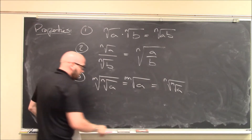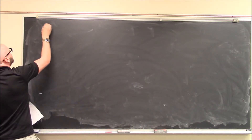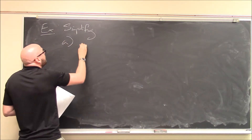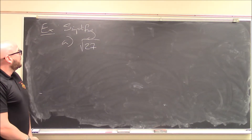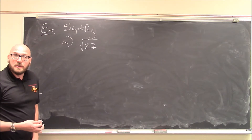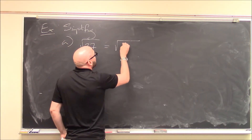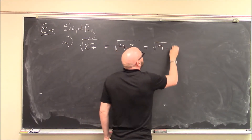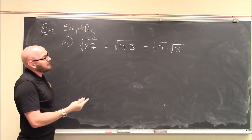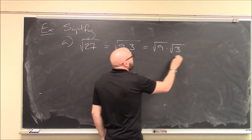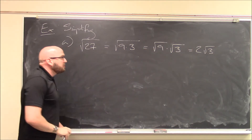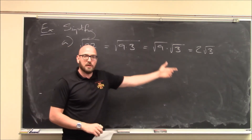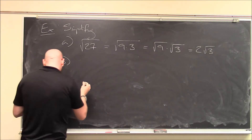Using these properties, we'll simplify a few expressions. Simplify: the square root of 27. There's no whole number that when multiplied by itself gives 27. But I can think of this as the square root of 9 times 3 — because 9 times 3 is 27. I can write this as the square root of 9 times the square root of 3. The square root of 9 is 3, so this is 3 root 3. Most people would agree that's simplified — it looks prettier than the square root of 27.